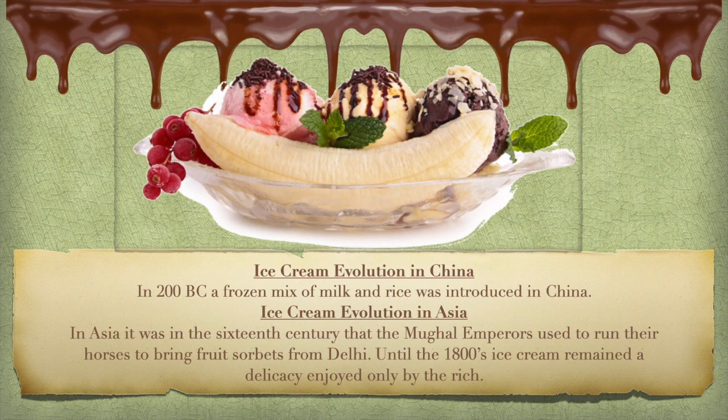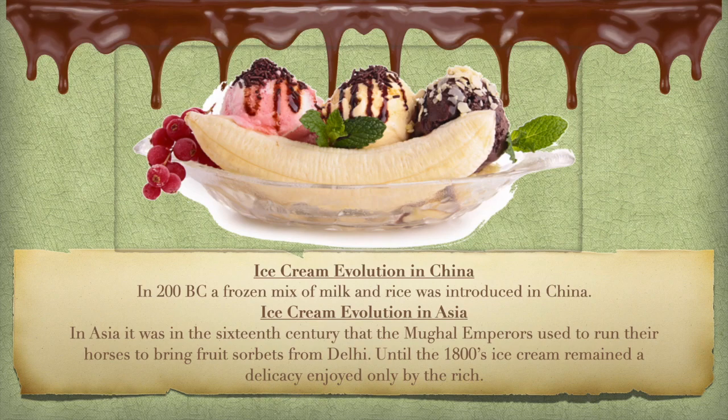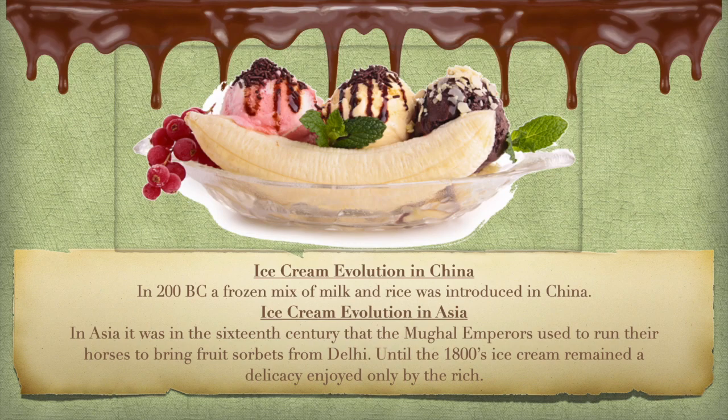Ice cream had an evolution from China and Asia as well. In 200 BC, a frozen mix of ice and rice was introduced in China. And then in Asia, it was around the 16th century that they began to use their horses to bring fruit sorbets from Delhi. And until the 1800s, ice cream remained a delicacy only enjoyed by the rich.